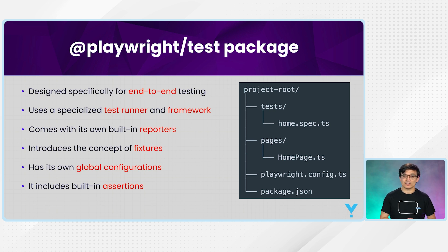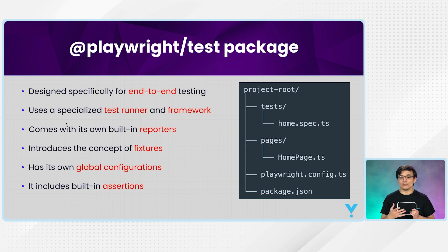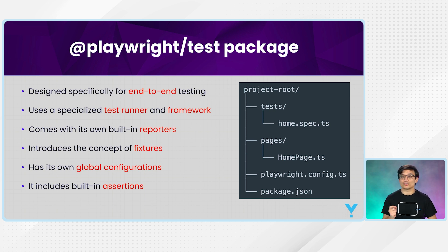During this course we are going to learn a special package called the Playwright Test package. This package is designed specifically for end-to-end testing and uses a specialized test runner and framework. You do not need external test runners like JUnit or TestNG — Playwright comes with its own test runner and framework, and also has its own built-in reporting, requiring no additional configuration.